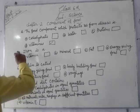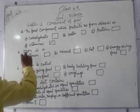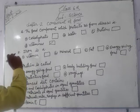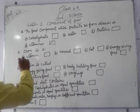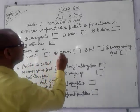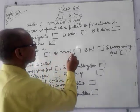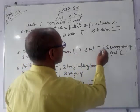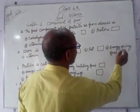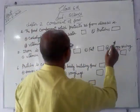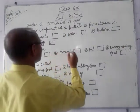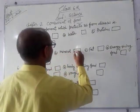Option number 5. Iron is a type of which food component? Option A: Vitamins. Option B: Minerals. Option C: Fats. Option D: Energy giving food. Option number B is correct — Minerals.